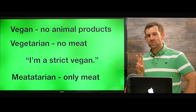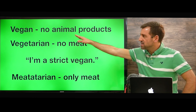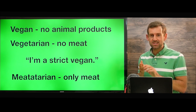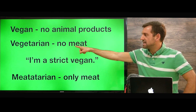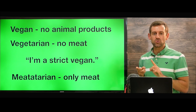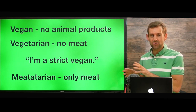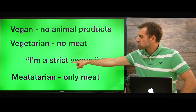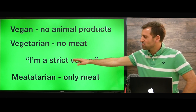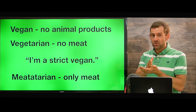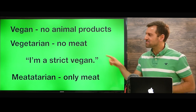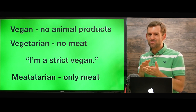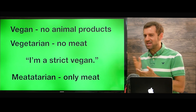Now I want to teach you two important words: vegan and vegetarian. Vegans don't eat any animal products — no milk, no eggs, no cheese, nothing. Vegetarians don't eat meat, but they do eat eggs, drink milk, eat cheese, and other animal byproducts. Sometimes you'll hear the word 'strict' — like 'I'm a strict vegan' or 'I'm a strict vegetarian.' Strict means you follow the rules. I know some vegans who eat ice cream, which is made from milk — so they're sort of breaking the rules.